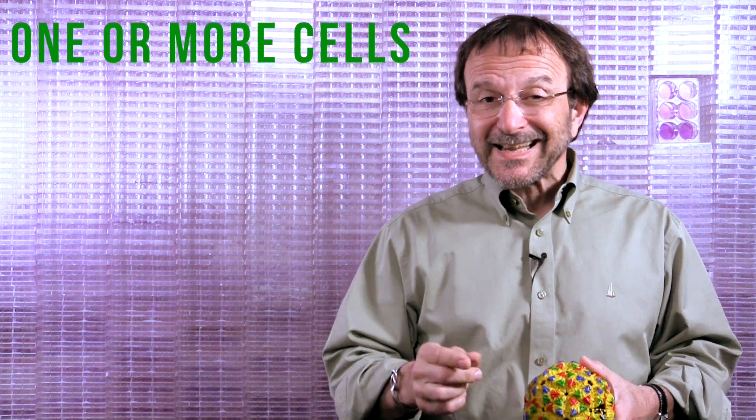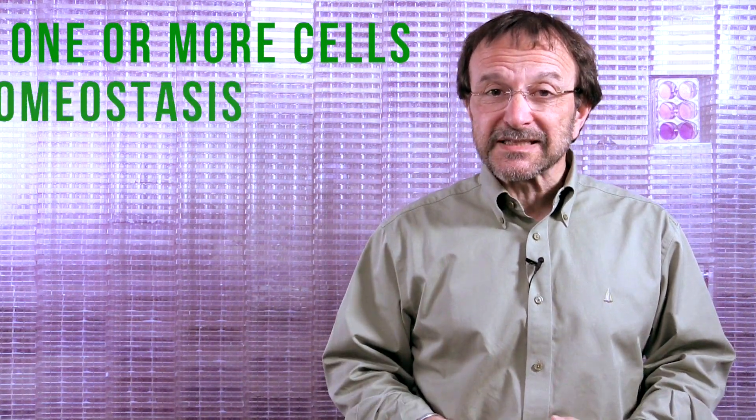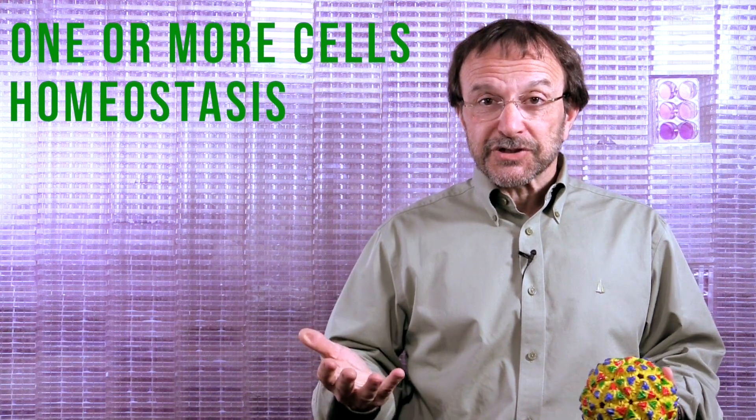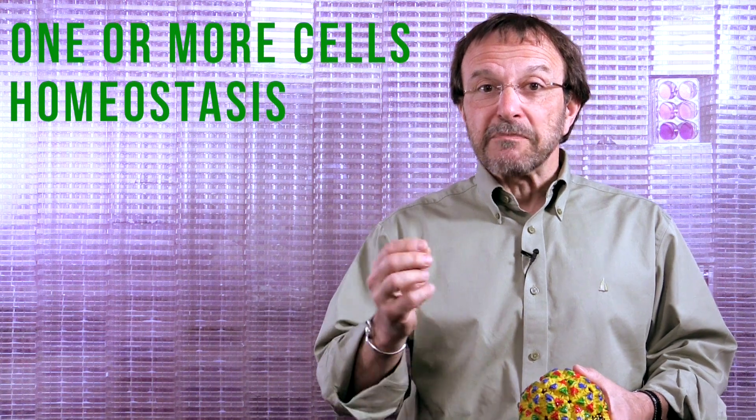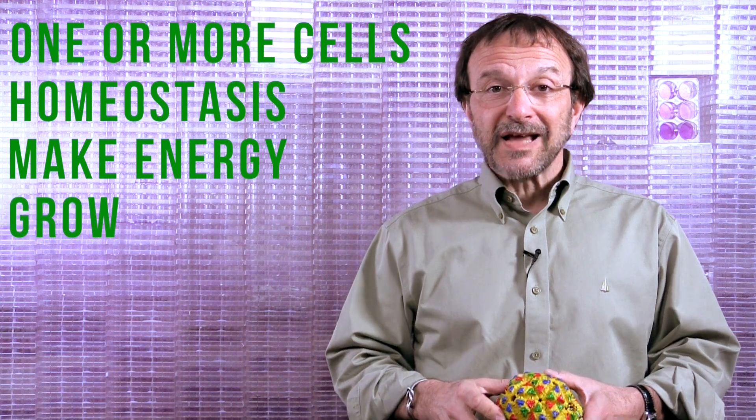So here we go. Something that's living should have most of these following properties. It should be composed of one or more cells. It should have homeostasis. This is the ability to regulate important properties, such as pH or temperature. It should have the ability to make or generate energy, to grow,